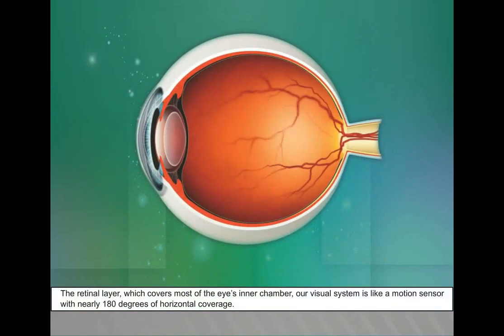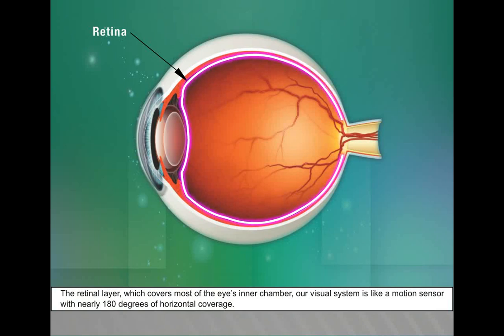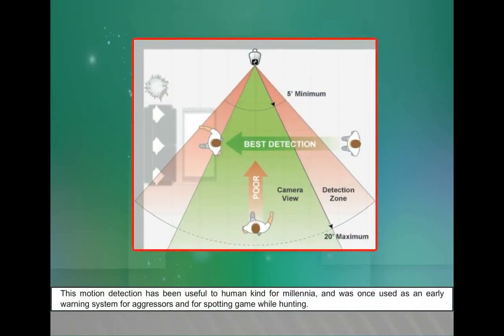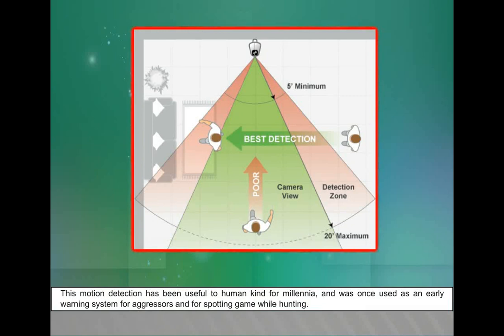The retinal layer which covers most of the eye's inner chamber - our visual system is like a motion sensor with nearly 180 degrees of horizontal coverage. This motion detection has been useful to humankind for millennia and was once used as an early warning system for aggressors and for spotting game while hunting.